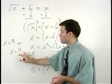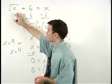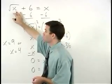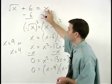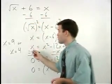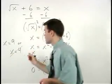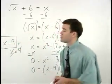But notice that when we plug a 4 back in for x in the original equation, we have the square root of 4, which is 2 plus 6 equals 4. And 2 plus 6 does not equal 4, so 4 cannot be a solution. And our answer is only x equals 9.